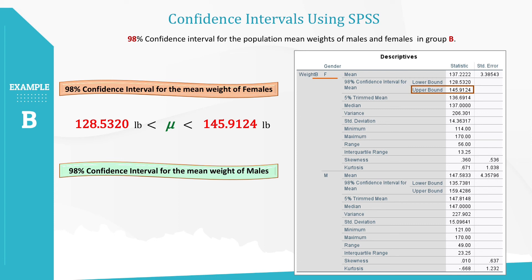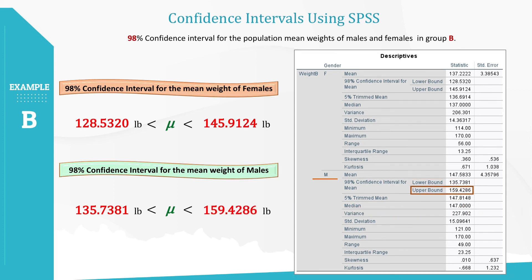Let's construct the interval for males in the same way. The output shows a lower bound value, so it is the lower confidence limit value. Similarly, it shows the upper bound value in the output, which becomes the upper confidence limit value. So we are 98% confident that the population mean weight of males in Group B is between 135.7381 pounds and 159.4286 pounds.